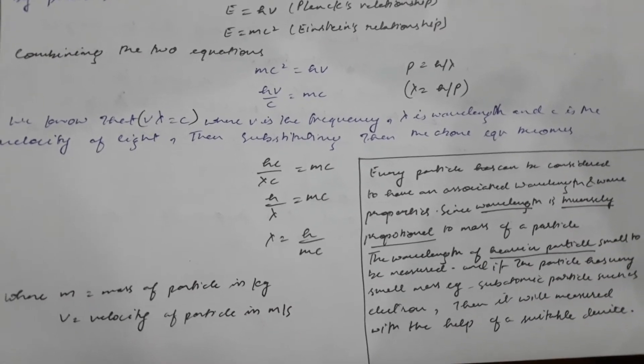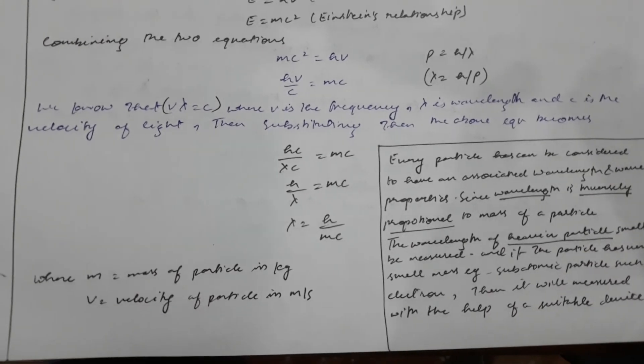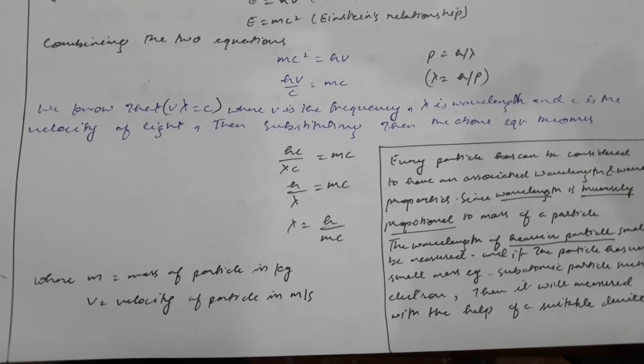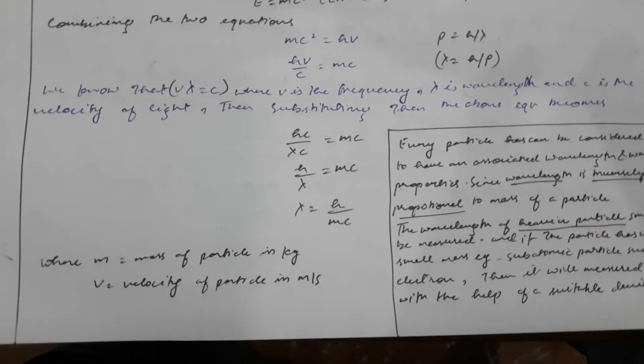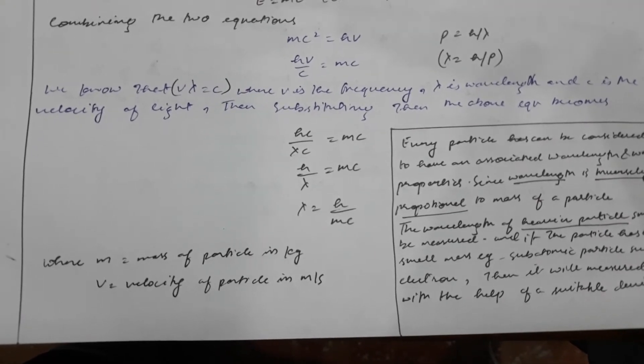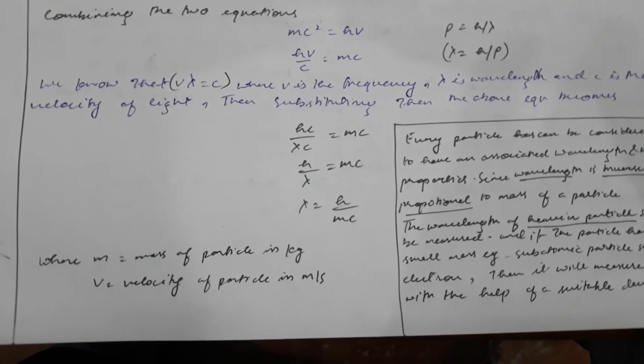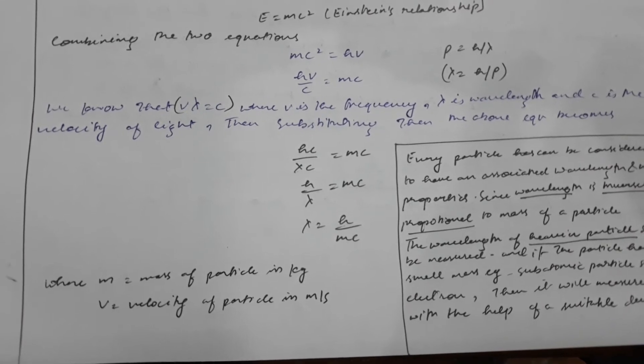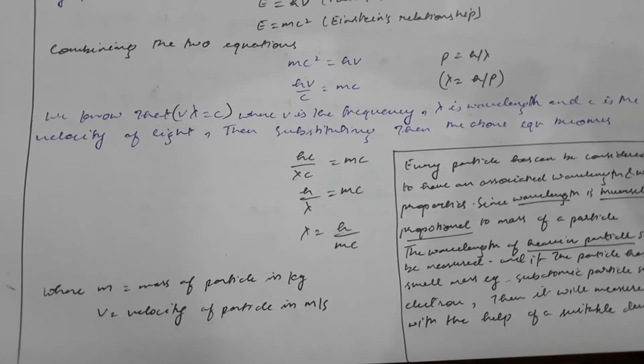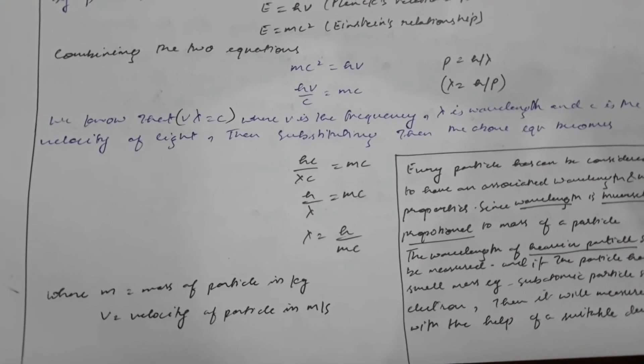Substituting the above equation, we get hc by lambda equals mc. After rearranging, lambda equals h over mc, where m is the mass of the particle in kilograms and c is the velocity of the particle in meters per second.